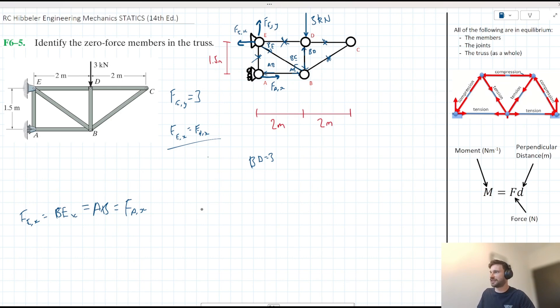Just for completion, let's label these all down. So we have DE, AE, BC and CD here. These are all our zero force members. If you have any questions or comments about this problem, please feel free to leave them in the comment section down below. Otherwise, thank you very much for watching.